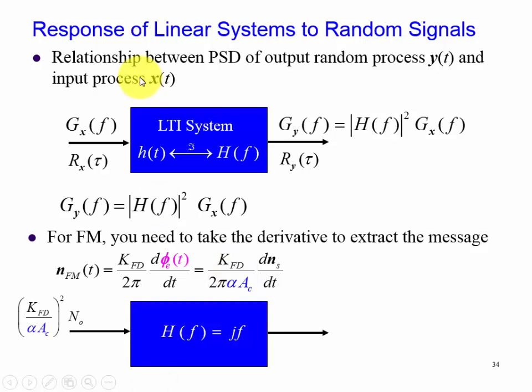So we replace this linear time invariant system with a derivative, and a derivative in the frequency domain in terms of hertz is jf. Hence, this is what's at our input. Review the previous slides if you don't recall. That's our power spectral density of our input.